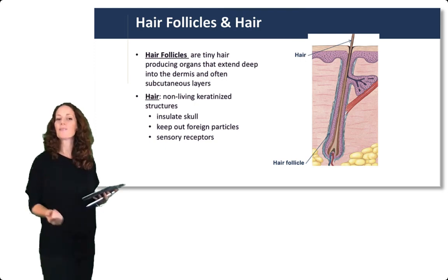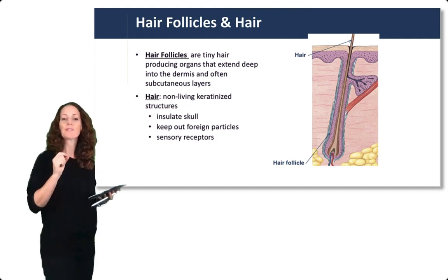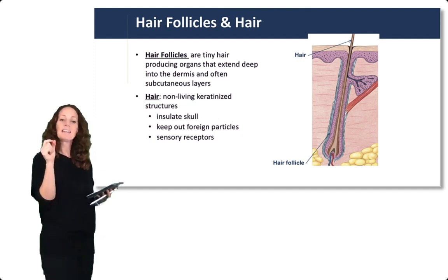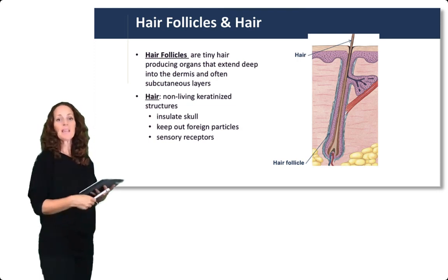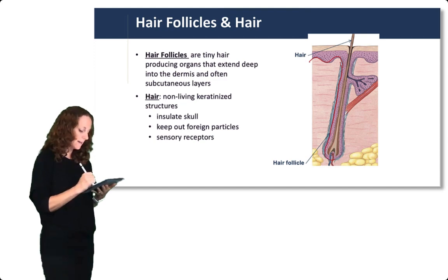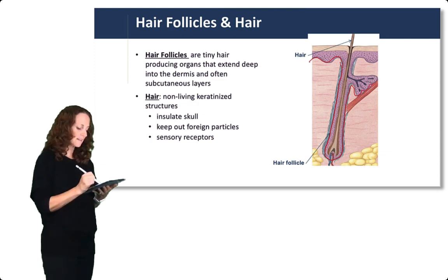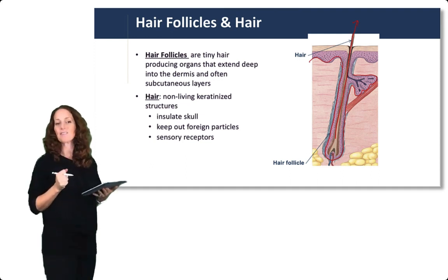Let's start with hair follicles and hair. Hair follicles are tiny microscopic hair-producing organs that extend deep into the dermis and often the subcutaneous layers. Looking at this diagram, you can see the base of the epidermis and then the hair follicles stretching all the way down into the dermis with a sebaceous gland nearby, and the hair stretching out to the surface of the dermis.